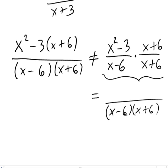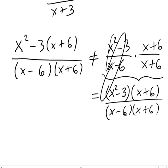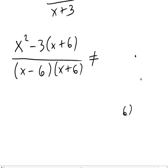When you multiply those numerators together, you get the quantity x squared minus 3 times the quantity x plus 6. Which is different, having those parentheses around that x squared minus 3 makes a difference. So, that's why we cannot cancel those x plus 6's. It cannot be separated off like that. So, what I'm going to do here is factor the numerator first. So, to factor it, I have to distribute the minus 3.